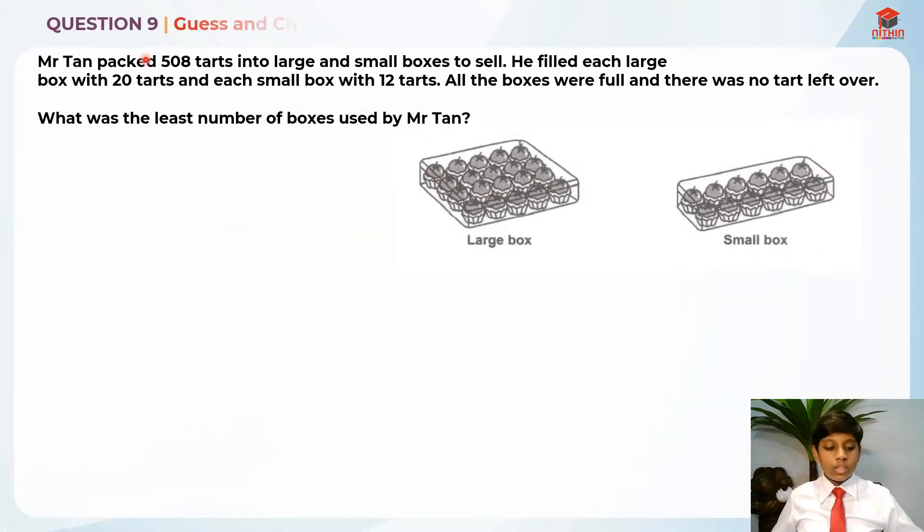This is question 9 and we need to use guess and check, or known as trial and error, to solve this question. Let's read the question first. Mr Tan packed 508 tarts into large and small boxes to sell. He filled each large box with 20 tarts and each small box with 12 tarts. All the boxes were full and there were no tarts left over. What was the least number of boxes used by Mr Tan? So here's the large box and here's the small box. Now that we've read the question, let's highlight the key information.